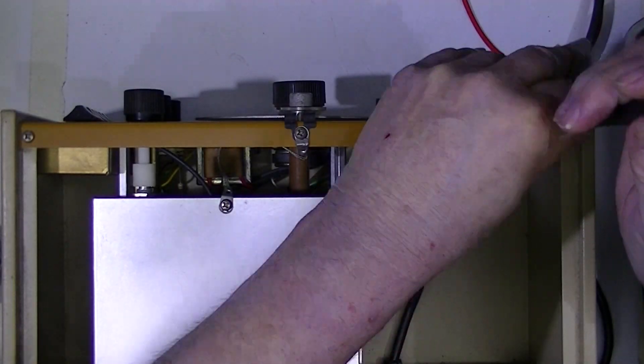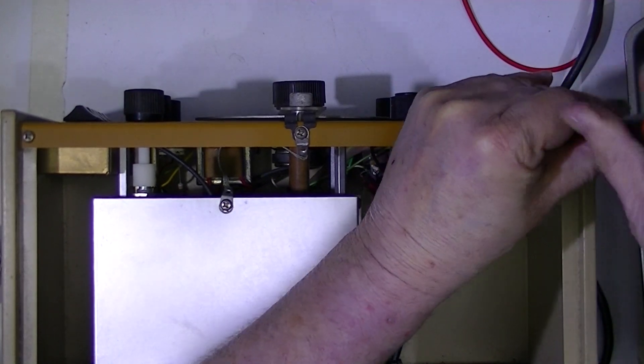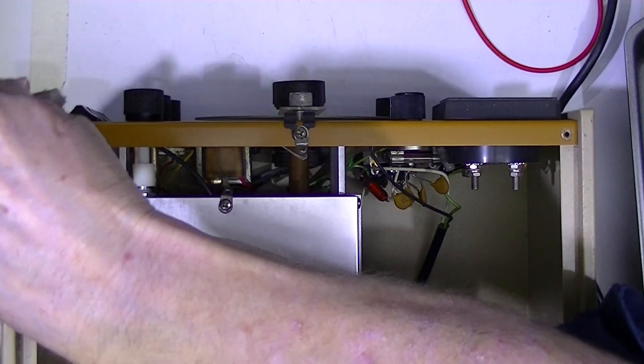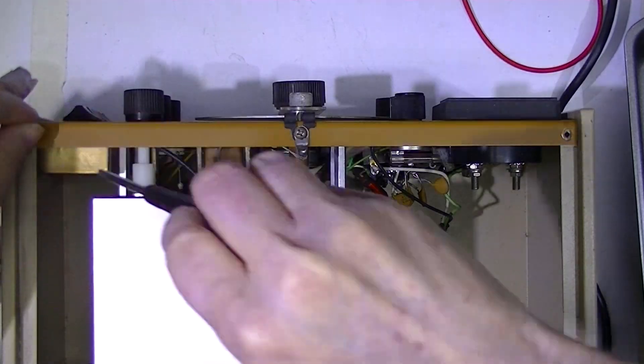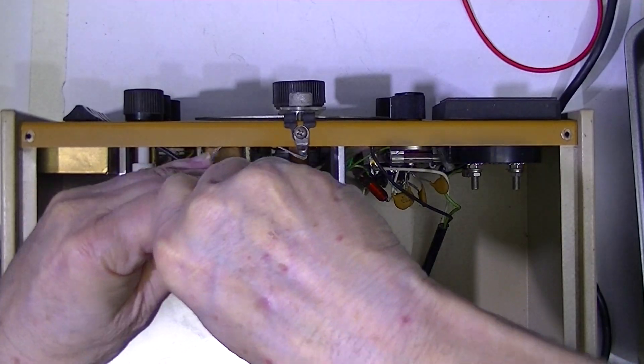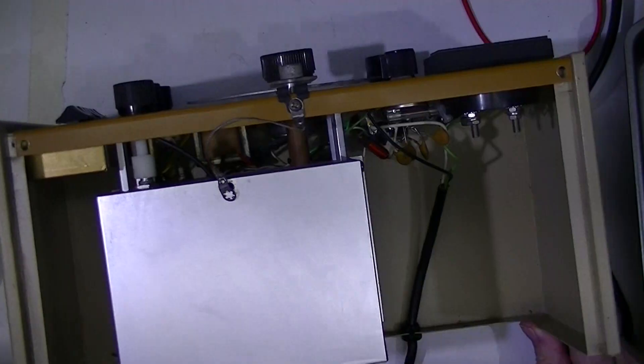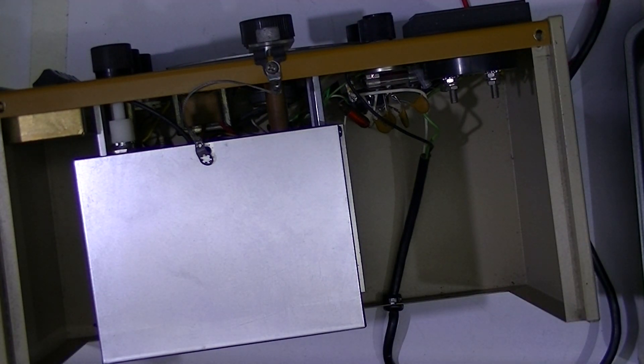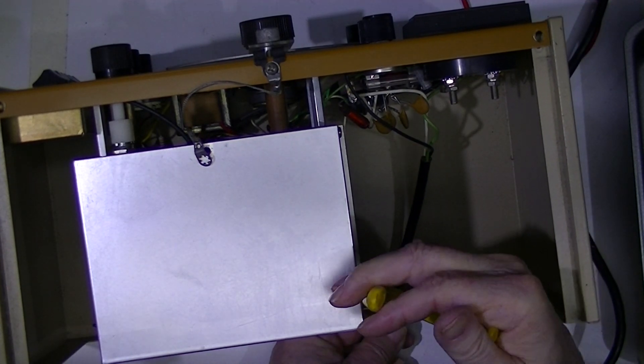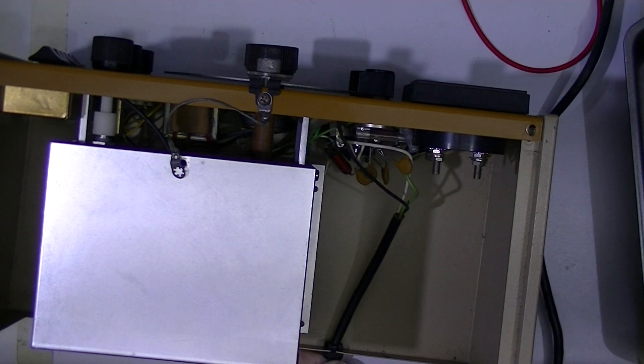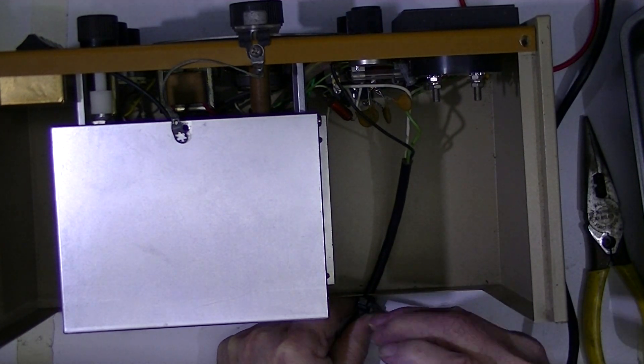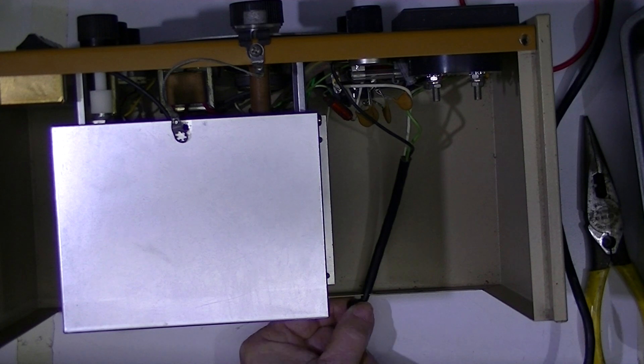Then we need to remove these two screws. And this grounded strap. Looks like we'll have to remove the power cord. The power cord cord grip. There's a little plastic. It's now two pieces.